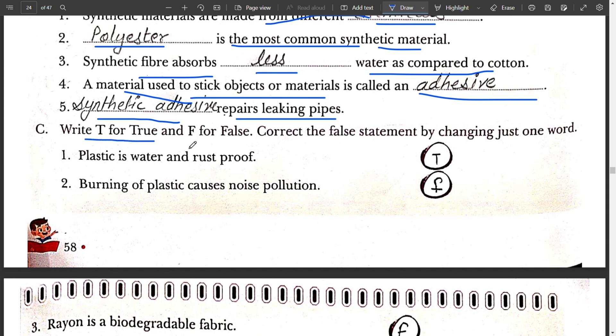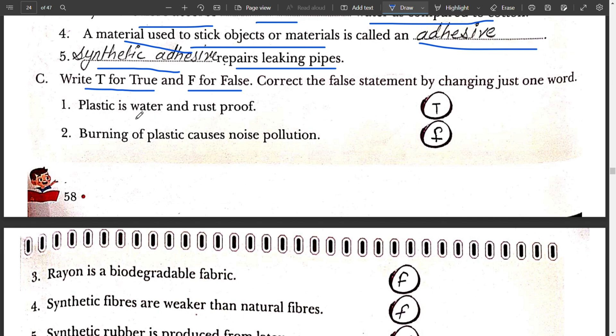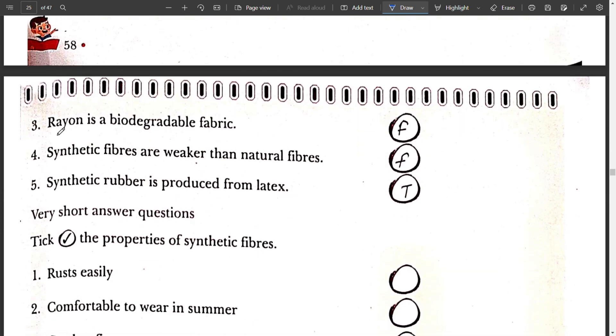Yes, write T for true and F for false. Correct the false statement by changing just one word. Plastic is water and rust proof. Yes, this is true. Plastic cause noise pollution. This is false. When plastic is burned, it cause air pollution. Rayon is biodegradable fabric. No, it is a non-biodegradable fabric. That is why this sentence is false.